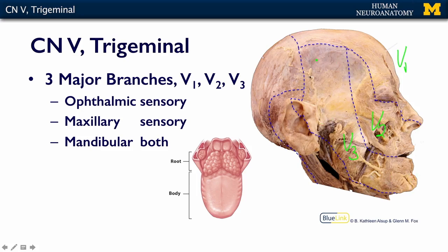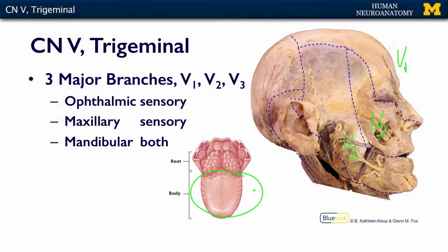V3 also innervates a little bit of the side of the head. The mandibular division also innervates the anterior, or presulcal, part of the tongue. So remember that taste is carried by cranial nerve seven, but general sensation — whether your pudding is smooth or lumpy — is going to be carried by the fifth cranial nerve for the anterior two-thirds.